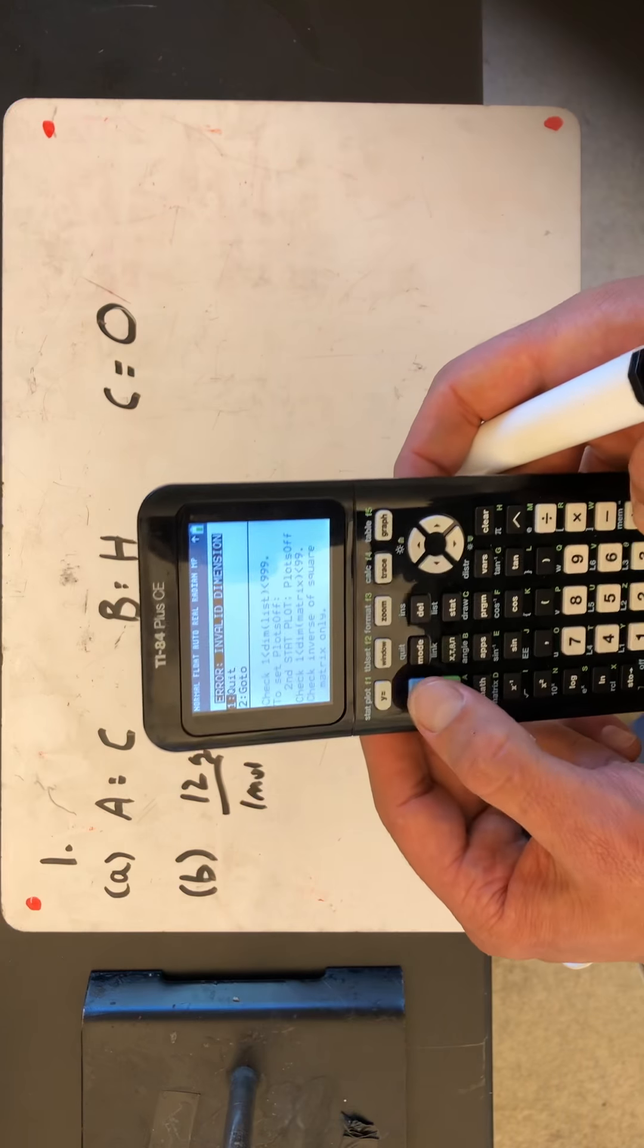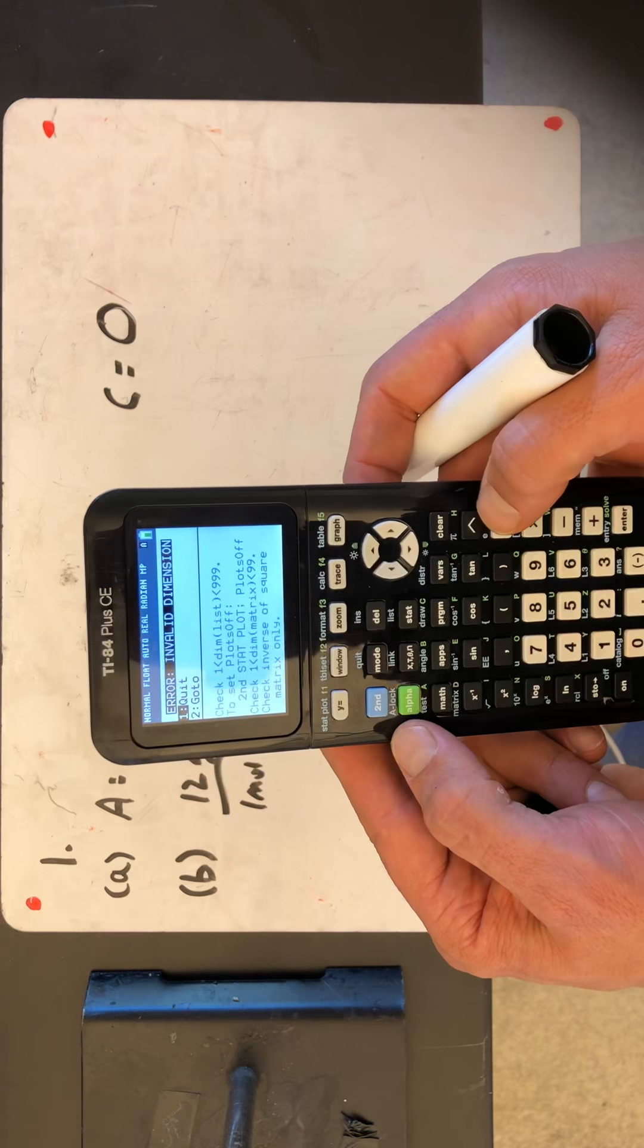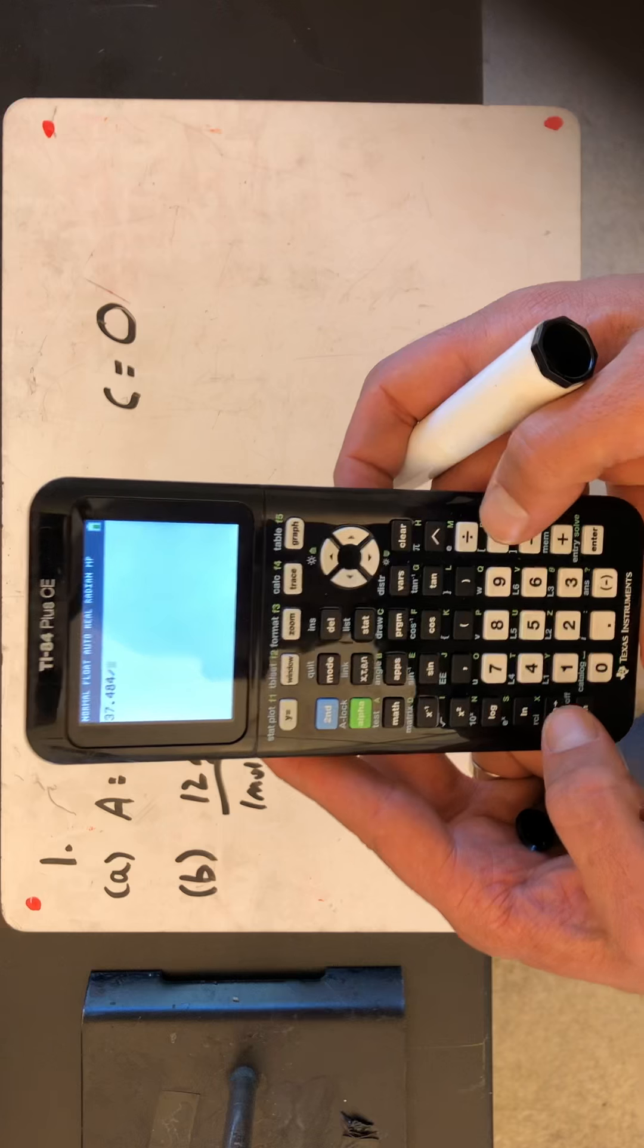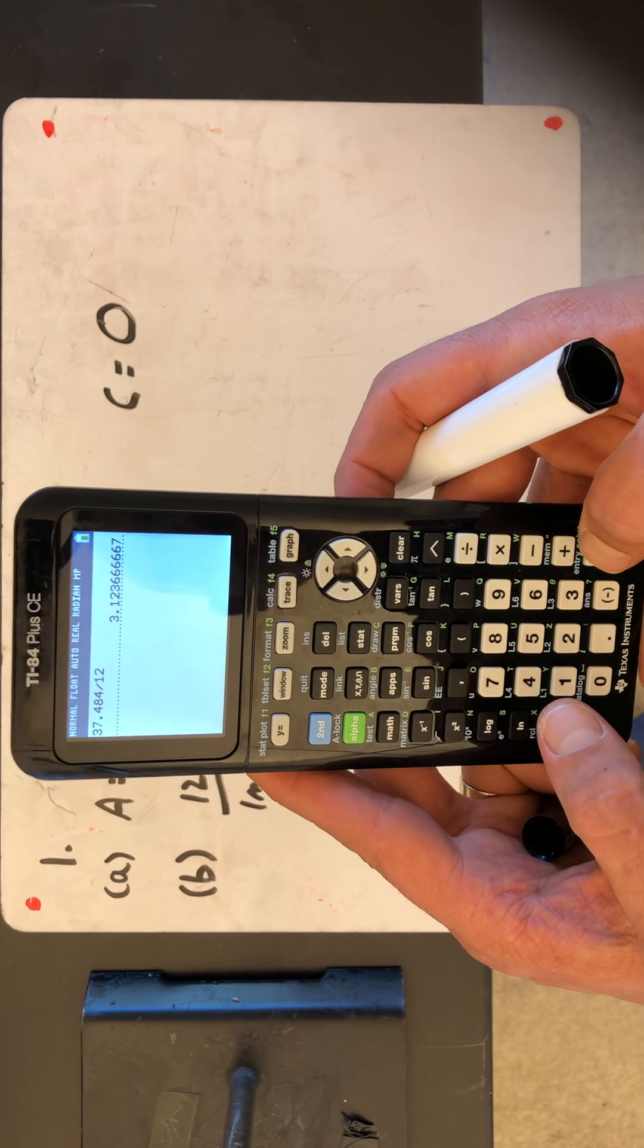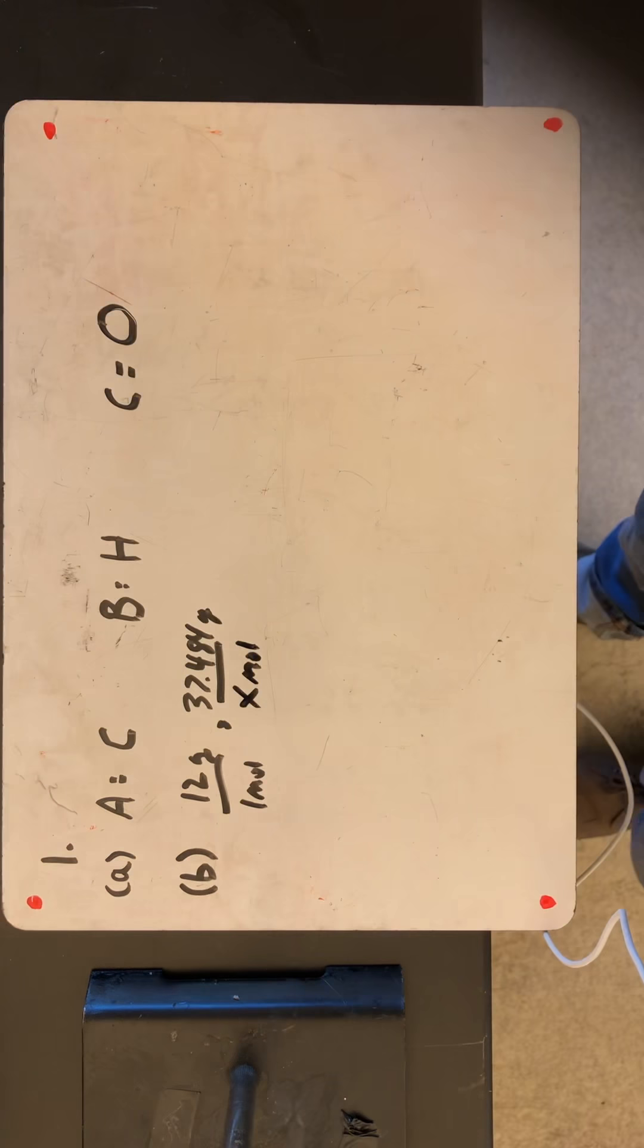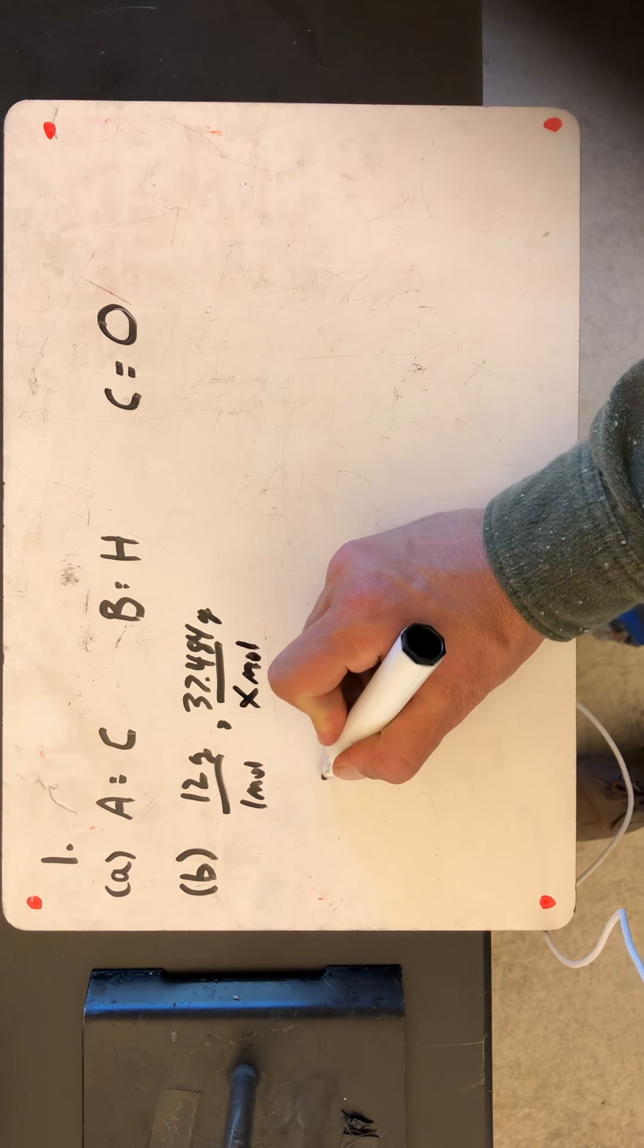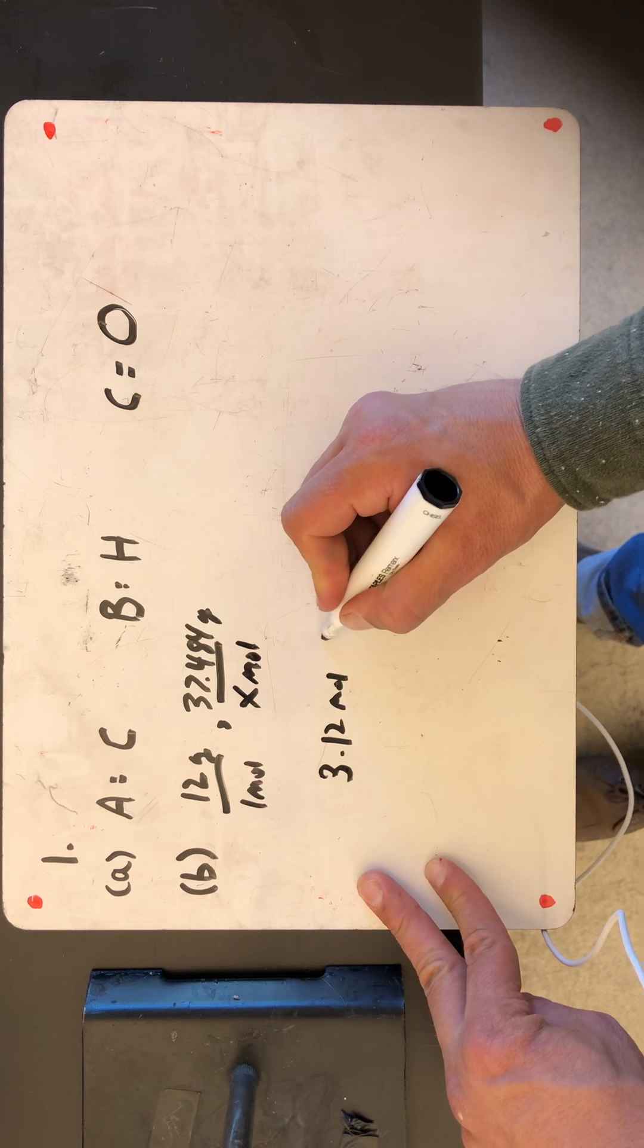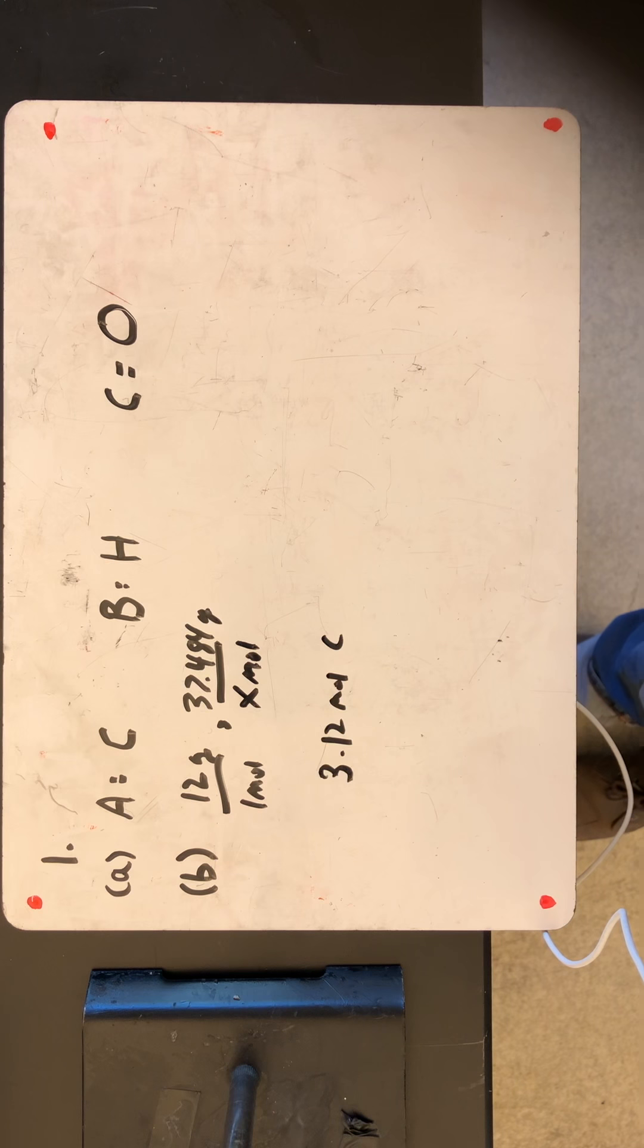And when I cross-multiply, I'm gonna get 37.484 divided by 12. So then I'm gonna say 37.484 divided by 12 equals 3.12. So that is 3.12 moles of carbon.